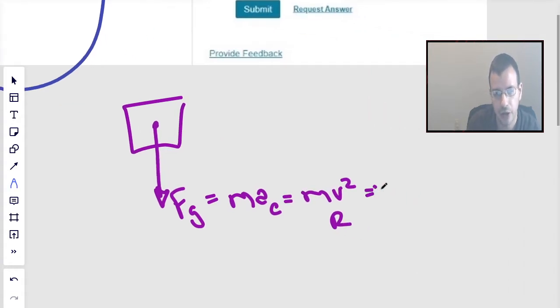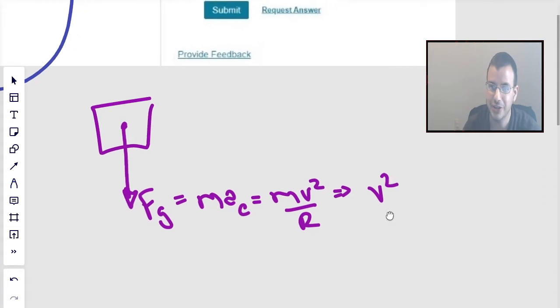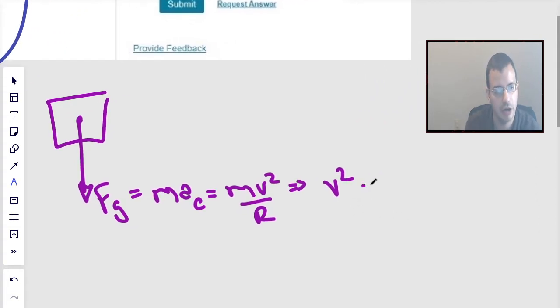Solving for the velocity here, we'll say velocity squared divided. Centripetal acceleration is v squared over r. And force-gravity is mass times gravity, so we'll use that.